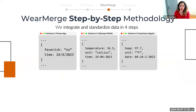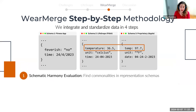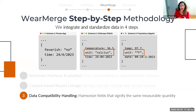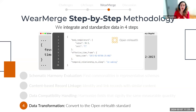Regarding data integration and standardization, we follow a methodology encompassing these steps: first, schematic harmony evaluation — examining which schemas include temperature-related information; second, content-based record linkage — for instance, one schema might call a field 'temperature' while another uses 'temp,' and we group these together because they represent the same measurable quantity; third, data compatibility handling — we harmonize fields with different measurement units into the same unit. After data transformation to the open mHealth standard, different data representations from diverse manufacturers would look the same.